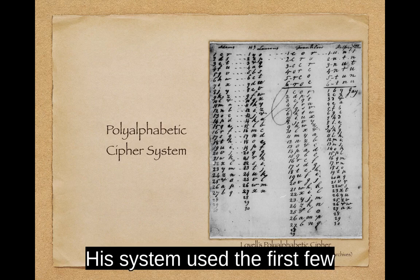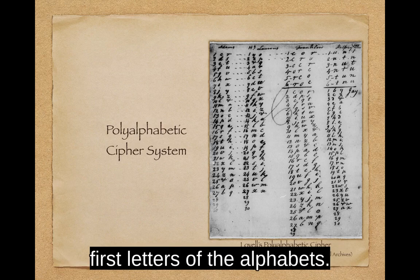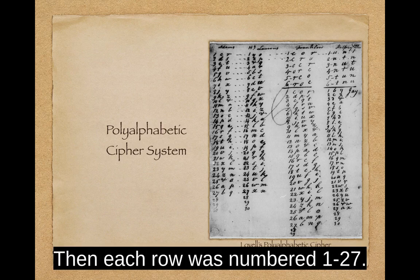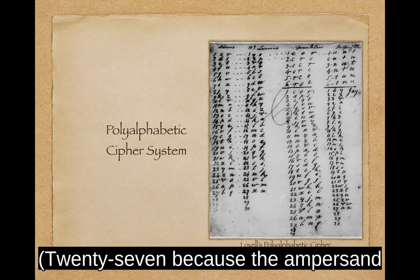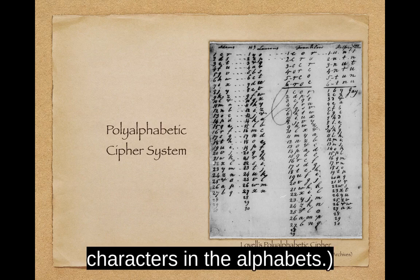His system used the first few letters of a keyword to create the first letters of the alphabets. Then each row was numbered 1 to 27 — 27 because the ampersand would also be one of the characters in the alphabets.